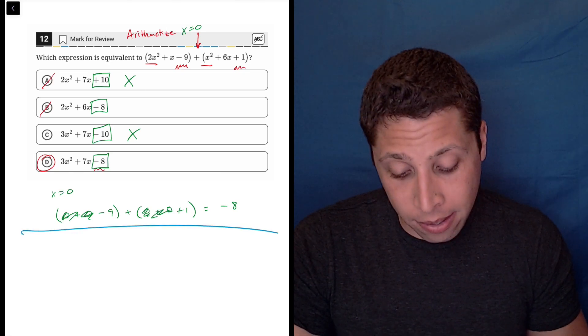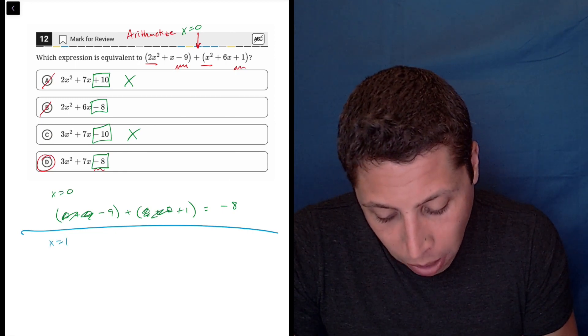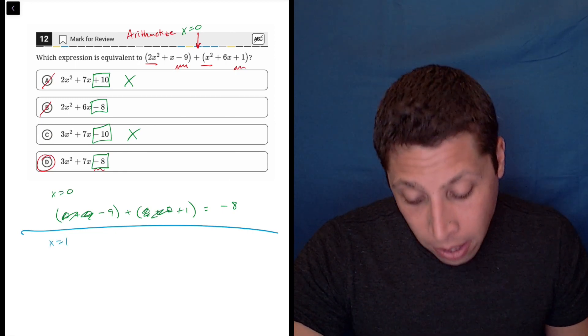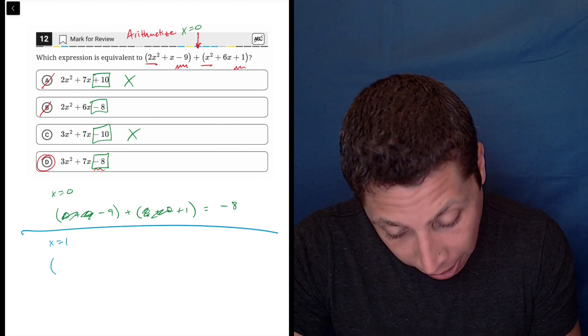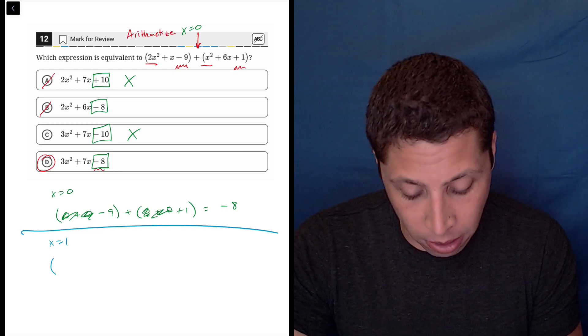What I would do at that point is I would just, well, you could look at the 2 versus the 3, or you can just pick a new number. So let's pick something like 1 and see if that helps us. So in that case, we'd have the exponents kind of go away even though the variables don't.